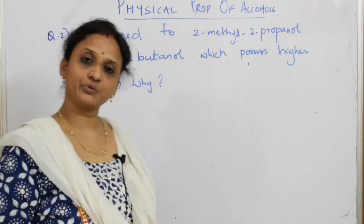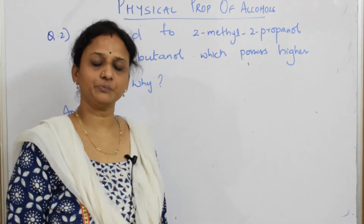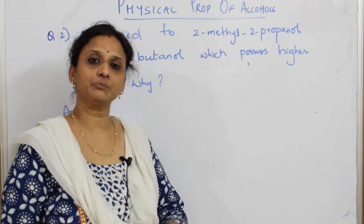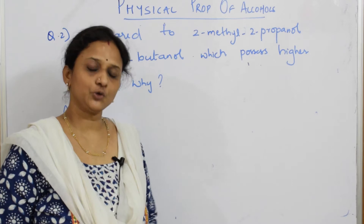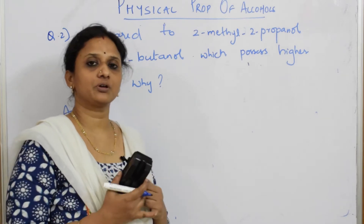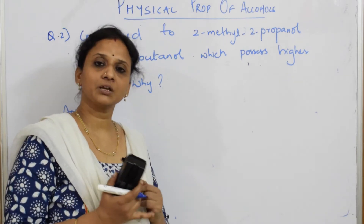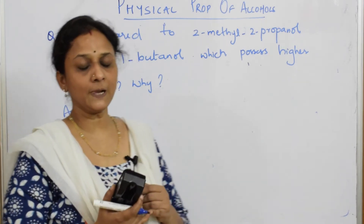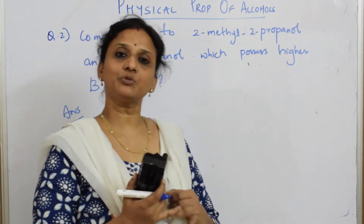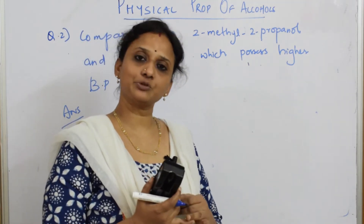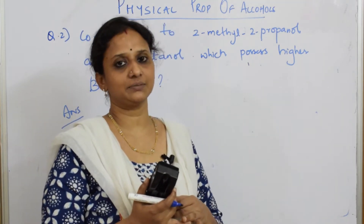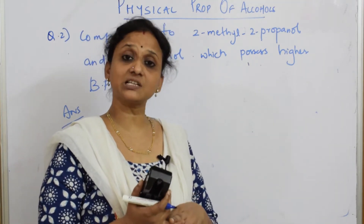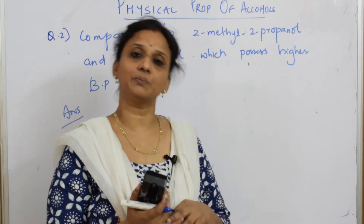Let us do one more question on boiling point. Remember whenever you're doing boiling point questions you have to remember three important things. One: boiling point is directly proportional to hydrogen bonding. Two: boiling point is directly proportional to number of carbon atoms. Three: boiling point is inversely proportional to branching.